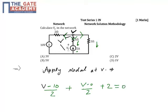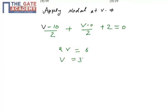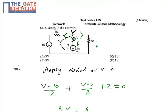So my equation will be (V−10)/2 + V/2 + 2 = 0. If we simplify this equation, it will be 2V − 10 + 2V + 4 = 0, giving 2V = 6, so V = 3 volts. By simplification, we can calculate the value of V as 3 volts. So the total branch voltage is 3 volts.